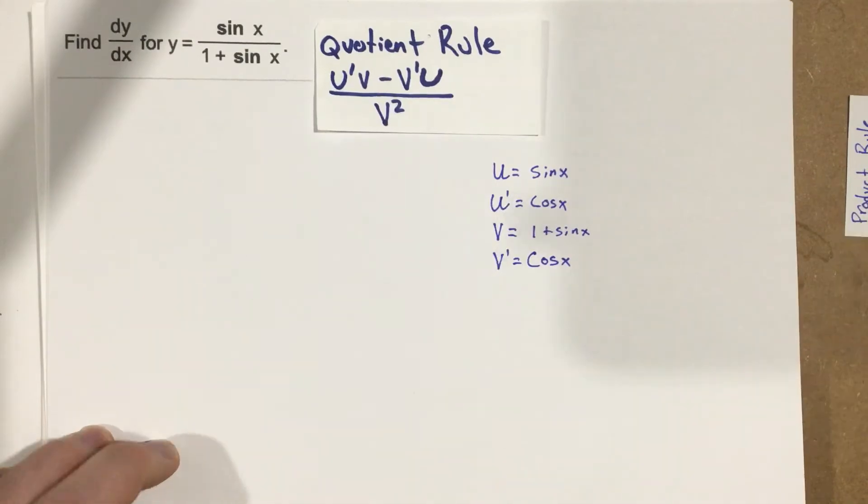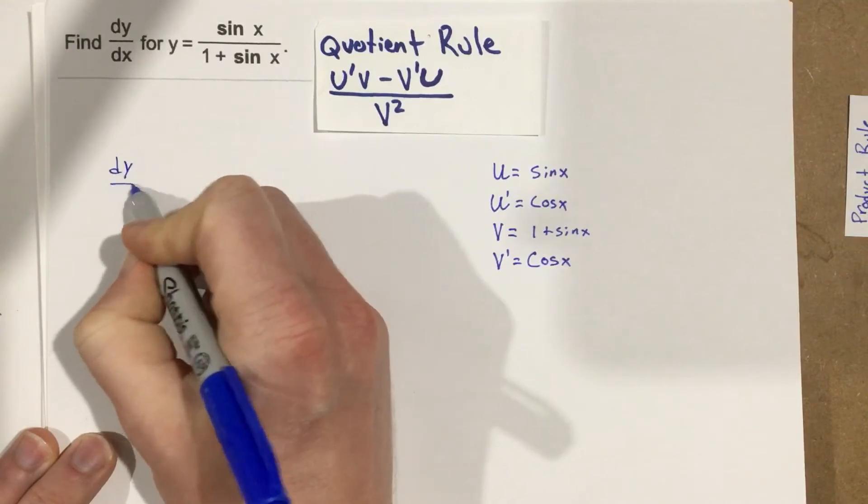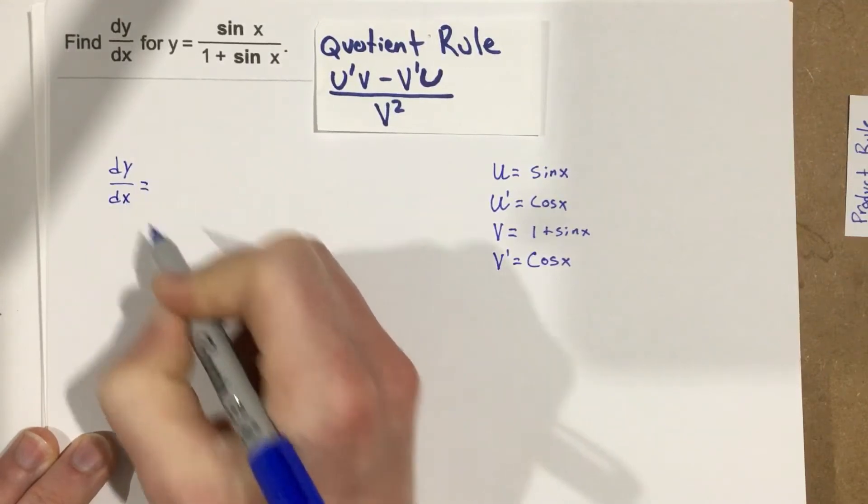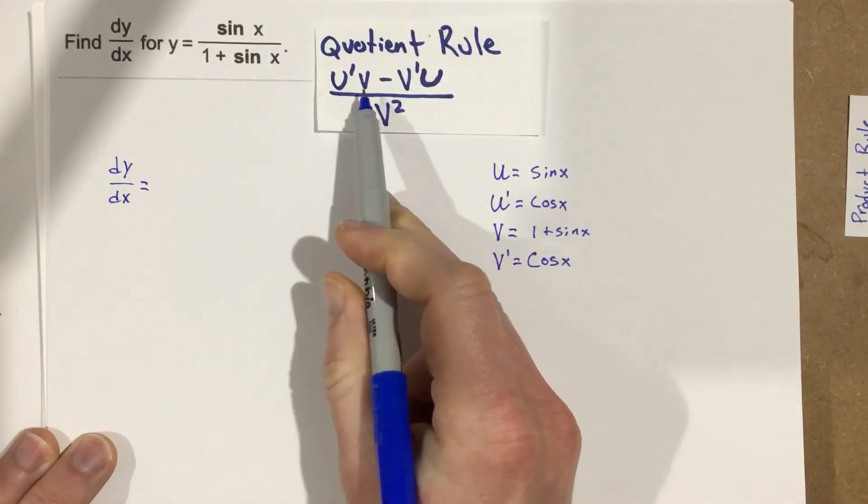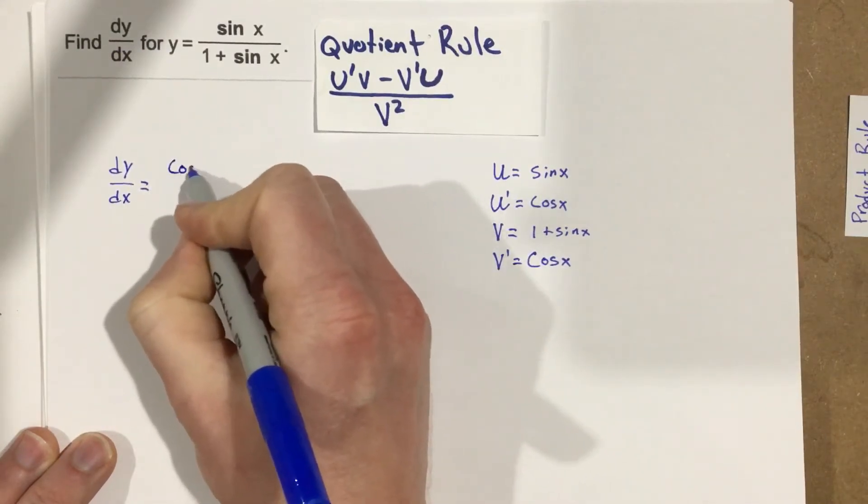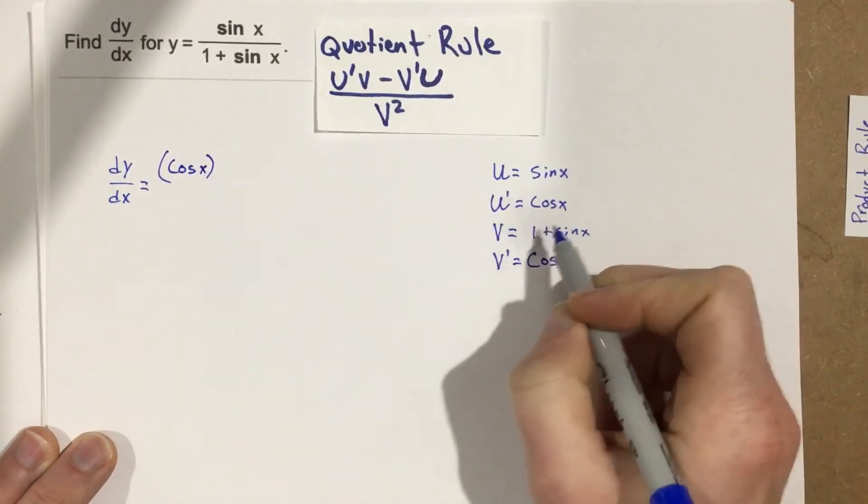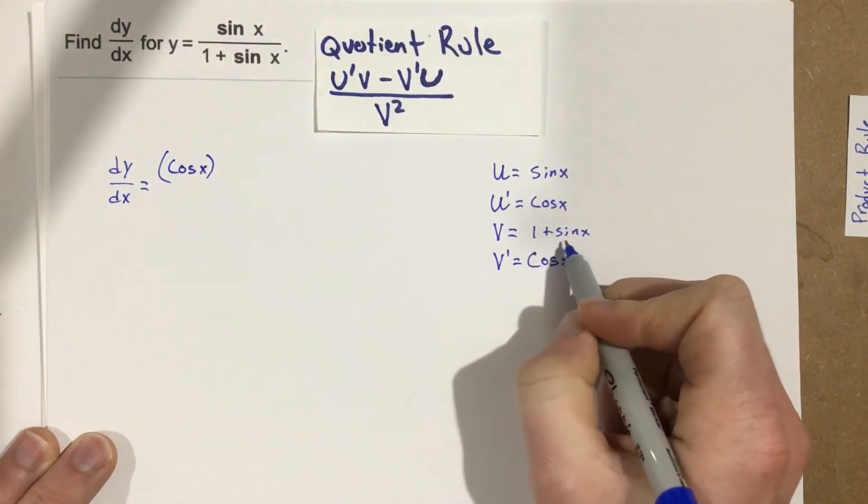So now we can use the quotient rule, and we'll say dy over dx equals, and we'll go u prime times v, so u prime is cosine x times v, which is 1 plus sine x.